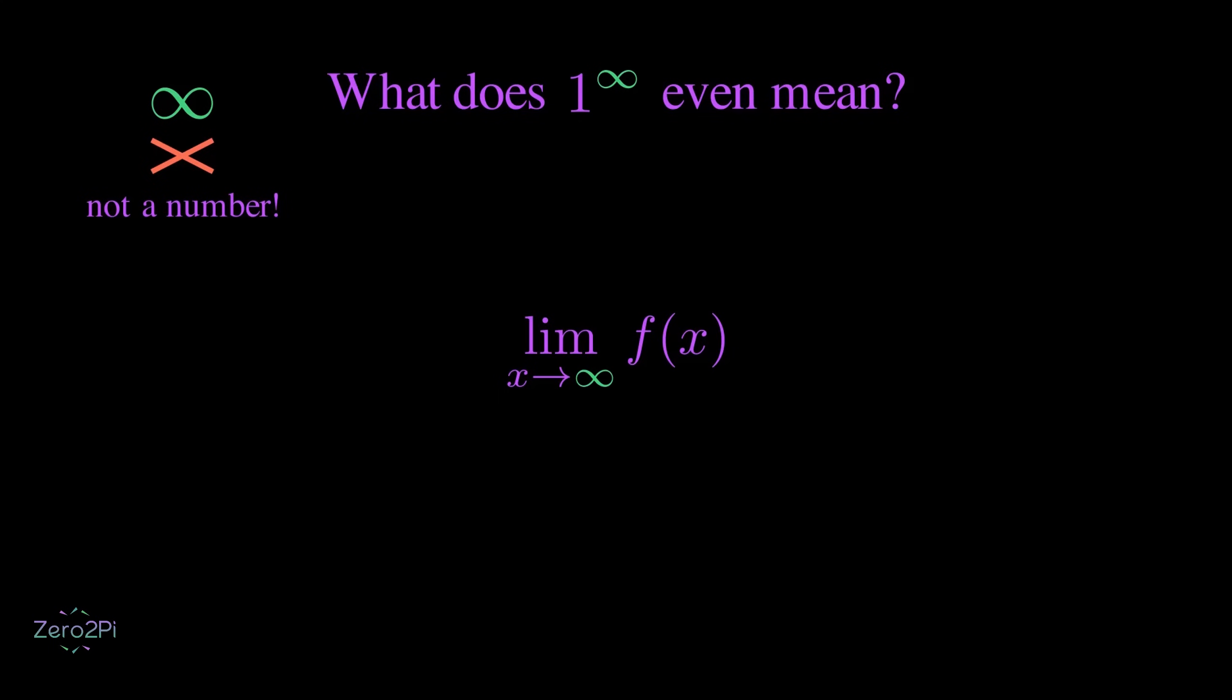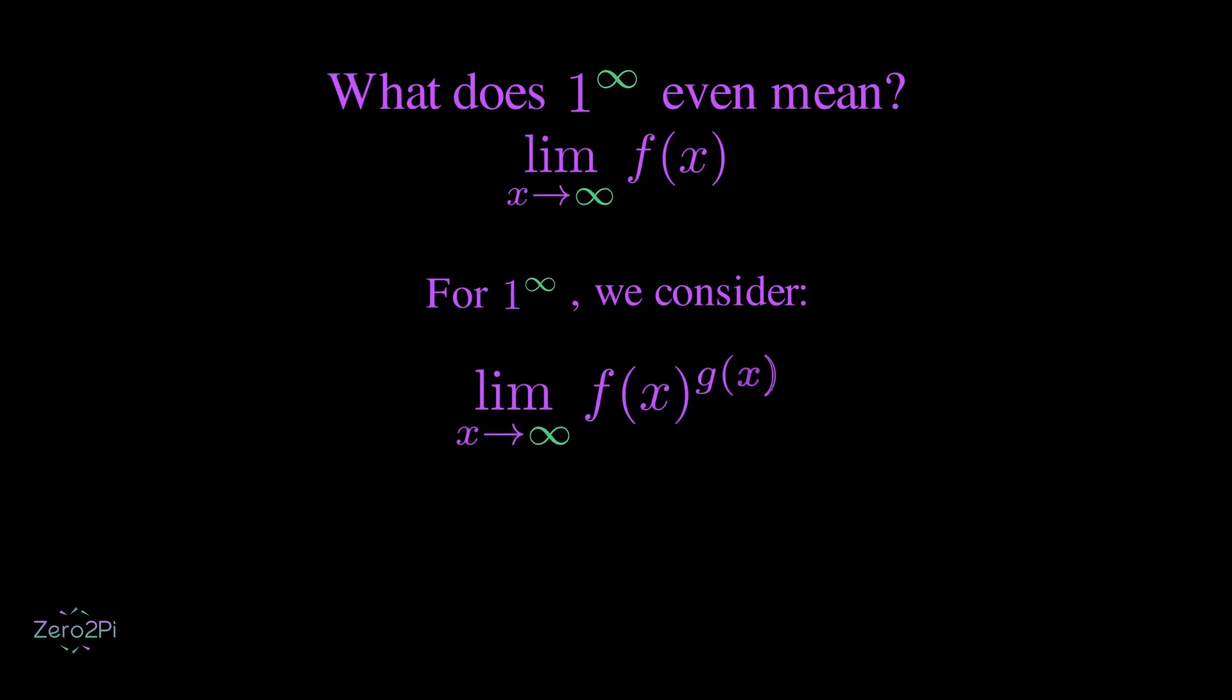So what does 1 to the power of infinity actually mean? Specifically, when we talk about 1 power infinity, what we really mean is a limit of the form: the limit as x approaches infinity of f(x) raised to the power g(x), where the base f(x) gets closer and closer to 1, and the exponent g(x) grows without bound.